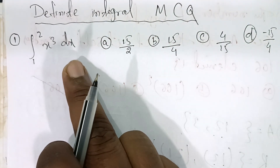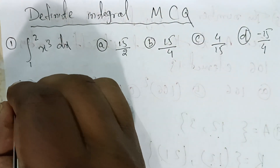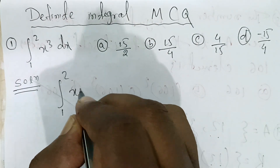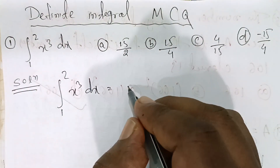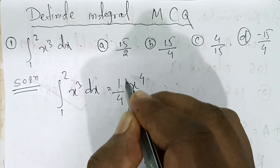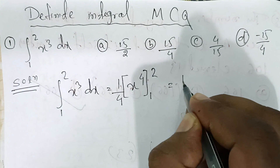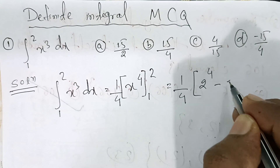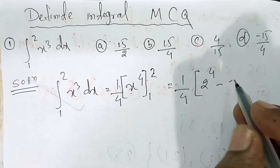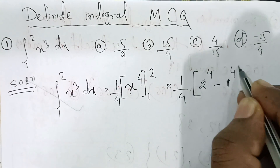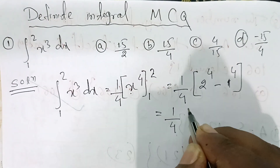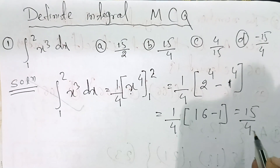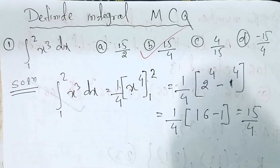Integration of 1 to 2, x³ dx. Let's do the solution. We integrate x³ dx to get x⁴ by 4, with limits 1 to 2. So, 1 by 4 times (2⁴ minus 1⁴). That gives 1 by 4 times (16 minus 1), which is 1 by 4 times 15, equal to 15 by 4. So, option B is the answer.